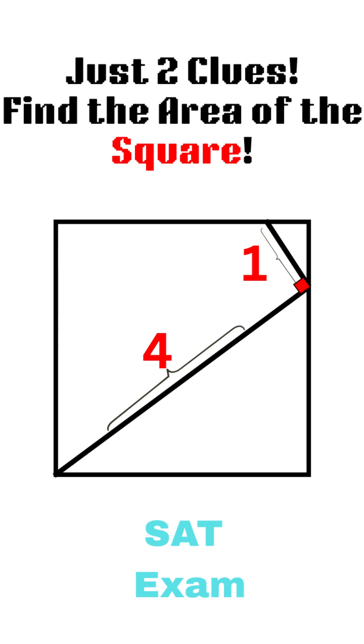So here is the setup. We've got a perfect square and one triangle has a hypotenuse of four units and the other one just one unit.